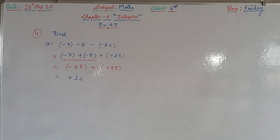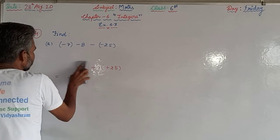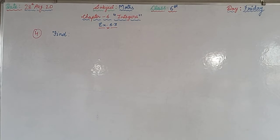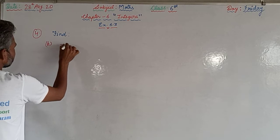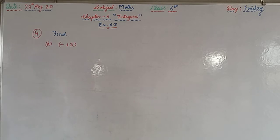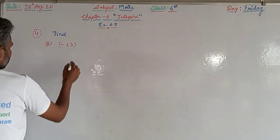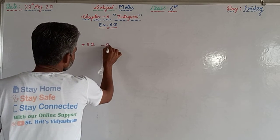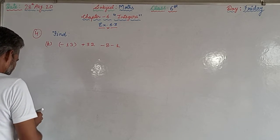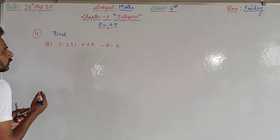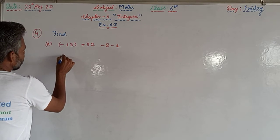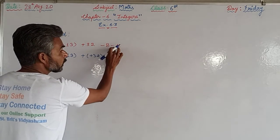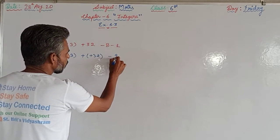Moving to part B: minus 13, then plus 32, and then minus 8 minus 1. We will try a different method here. Minus 13 stays; plus 32 stays; and since minus minus are like signs, that gives minus 9 (8 plus 1).